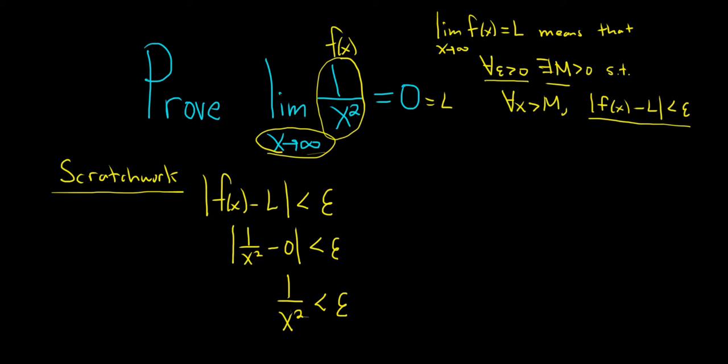Let's go ahead and solve for x. We want this to be true, so let's multiply by x squared. This will give us 1 less than epsilon times x squared. Then we can divide by epsilon.